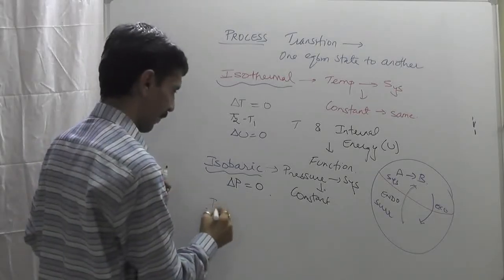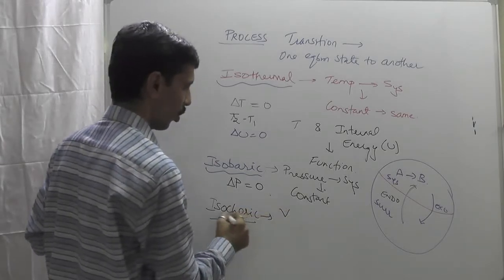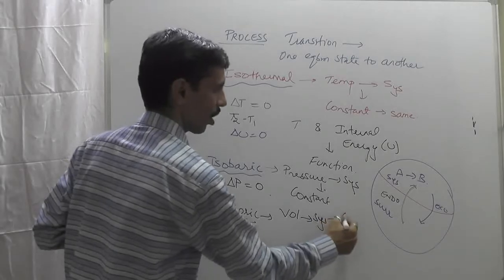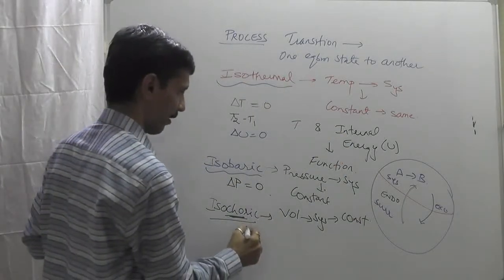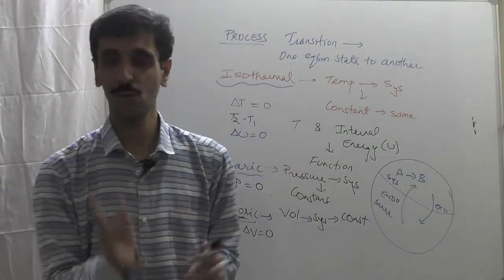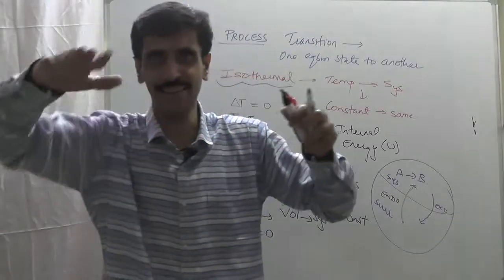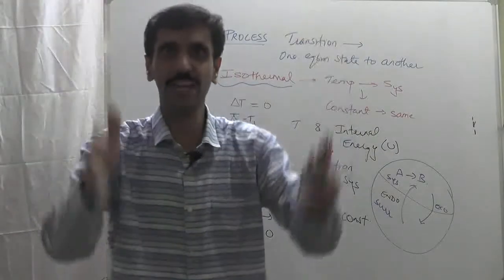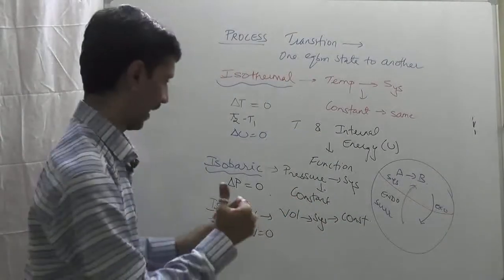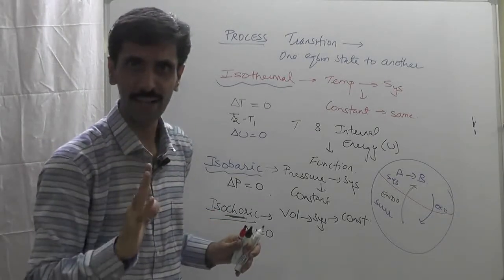Similarly, the third process is isochoric process. Here, core means volume, and therefore we say the volume of the system remains constant. If volume of the system remains constant, what will we write? Yes, once again the same thing my dear friends: delta V equal to zero. Don't say V equals zero. Remember the closed system I told you - with lid, the total amount of water will remain the same because the lid is also part of the system. So that comes under this category, isochoric process.